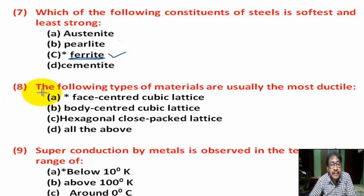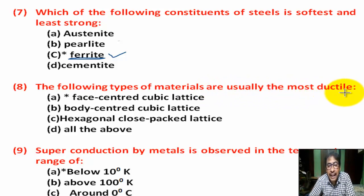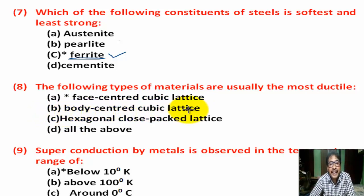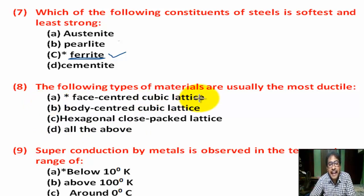Question number 8: The following types of materials are usually the most ductile — Option A: face-centered cubic lattice. Option B: body-centered cubic lattice. Option C: hexagonal close-packed lattice. Option D: all the above. Correct answer is Option A — face-centered cubic lattice.